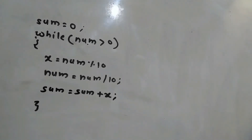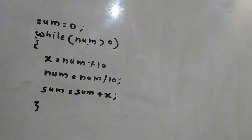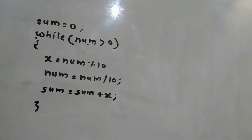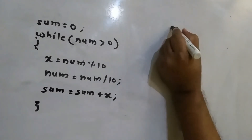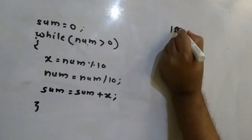Hello everyone. We will implement a program which will check whether a user-entered number is an Armstrong number or not. First of all, what is the definition of an Armstrong number? A number is called an Armstrong number if the sum of the cube of each digit of the number equals the original number. For example, 153 is an Armstrong number.